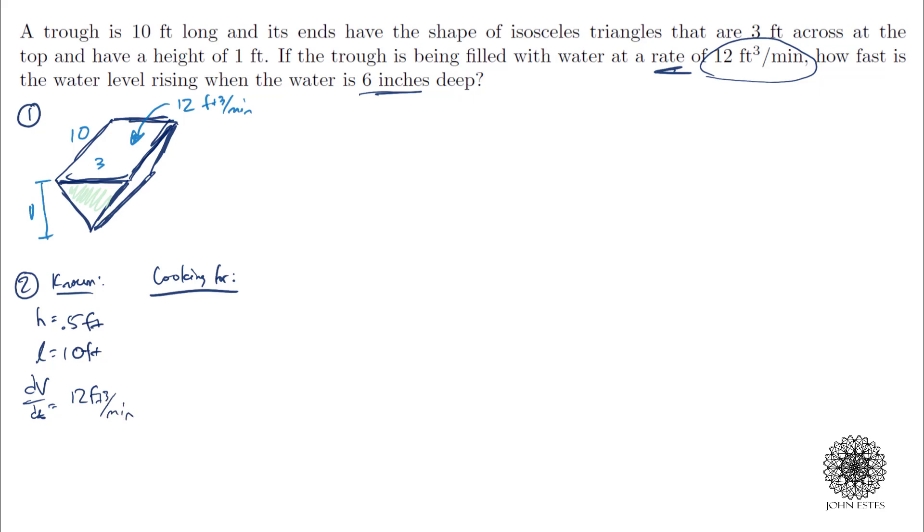Now what am I looking for is the question. So it says, if the trough is being filled with a rate of 12 cubic feet per minute, how fast, and the word fast just jumps off the page at you, is the water level rising? So that is a rate of change in the water level or a rate of change in the height. We're looking for dh/dt.